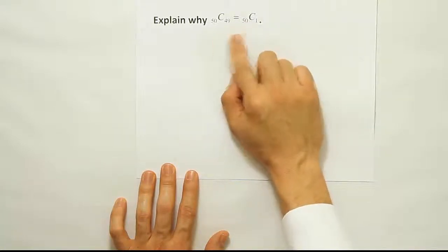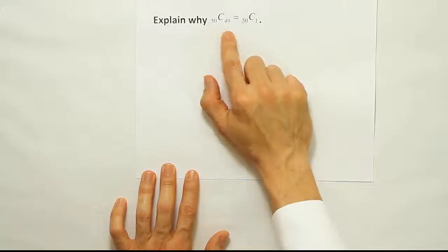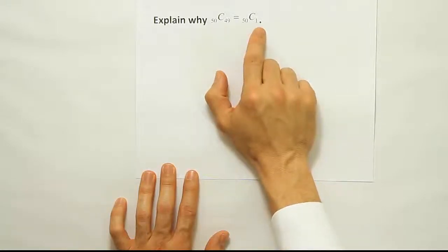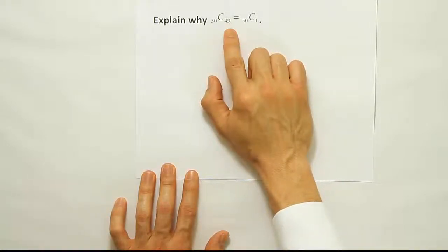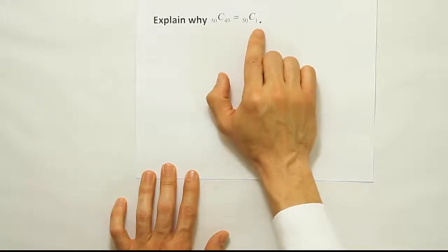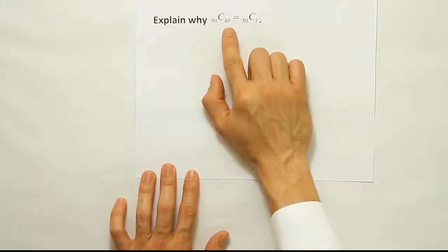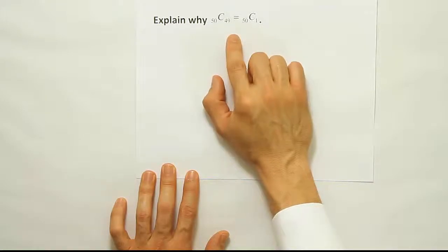So this is always true then in any case. So if you subtract these two numbers, that leftover amount would be 1. 50 minus 49 is 1. And that makes sense then, of course, that if you choose just the one item instead of choosing the 49, by default, you will be picking the 49.